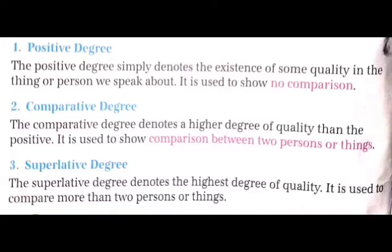Third is superlative degree. The superlative degree denotes the highest degree of quality. Superlative degree quality के सबसे ऊची degree को बताता है. It is used to compare more than two persons and things. इसका use दो या दो से अधिक persons या things के बीच compare करने के लिए किया जाता है.